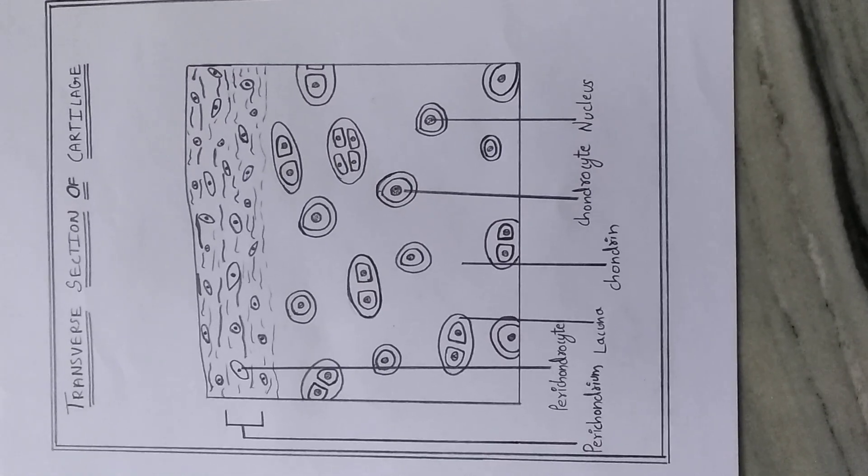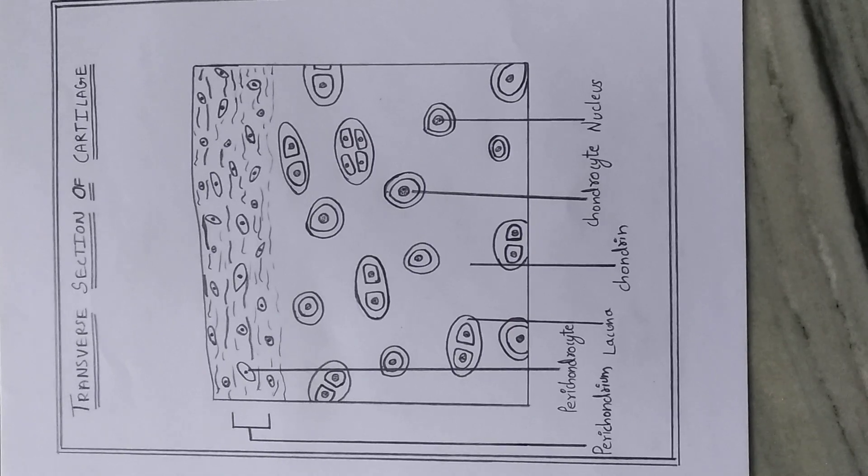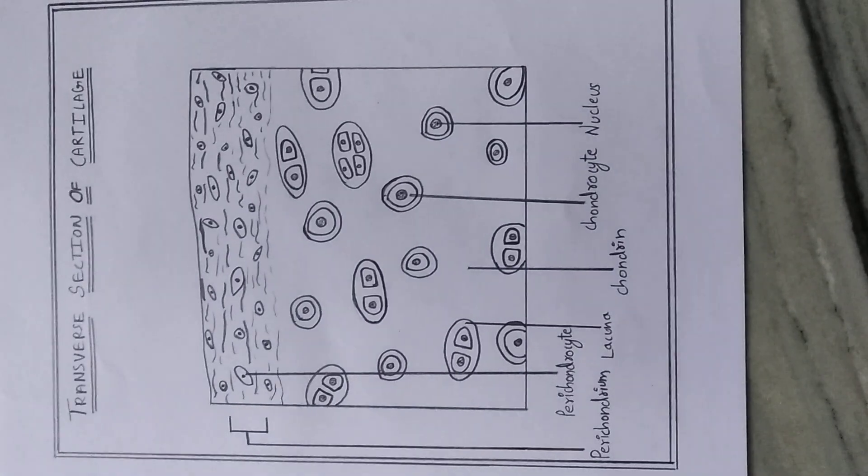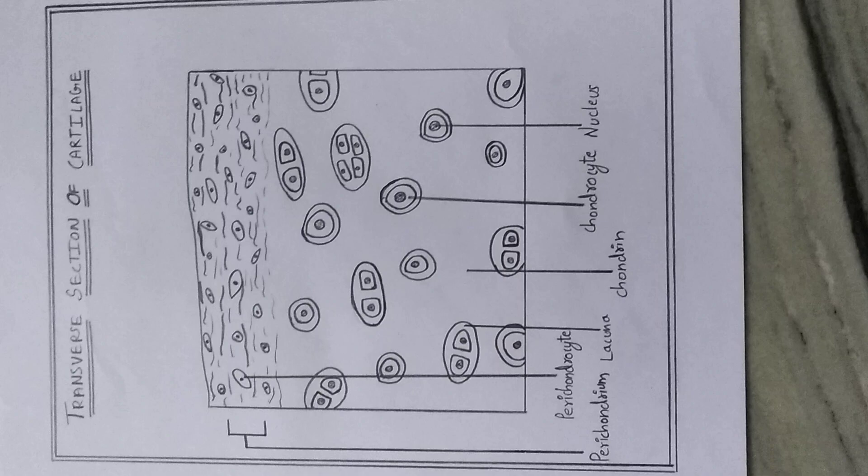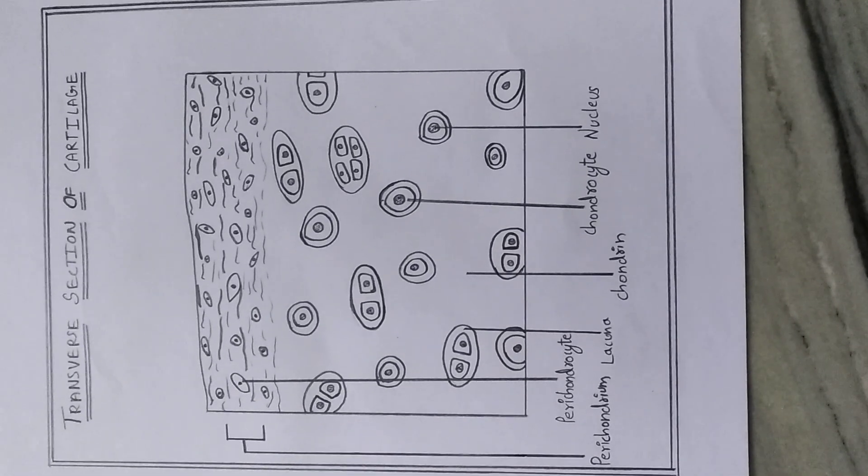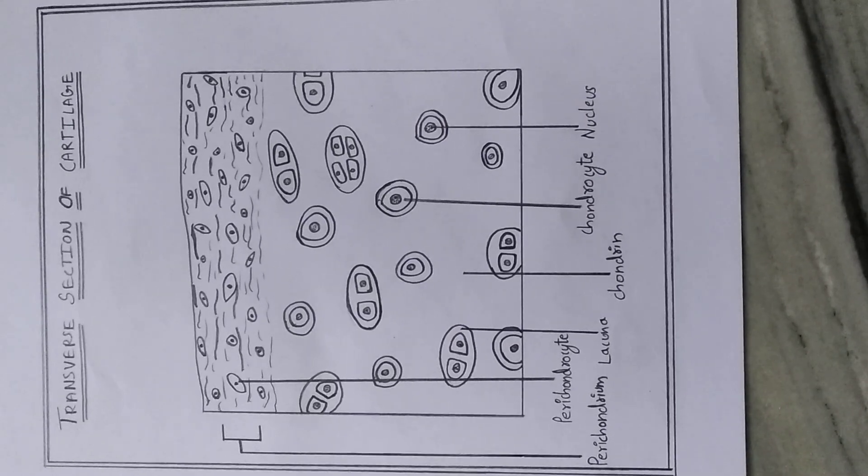This is a transverse section of cartilage. Its identifying characters are: cartilage is semi-rigid and somewhat flexible, and it is also called gristle. There are small spaces called lacunae in the matrix called chondrin. Each lacuna has one to four chondrocytes.